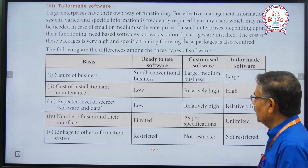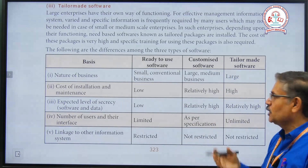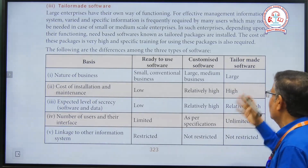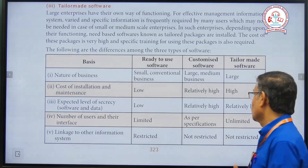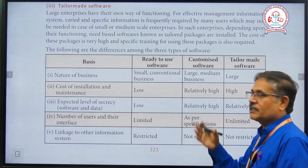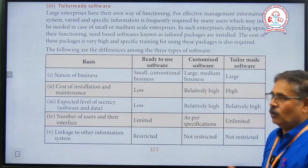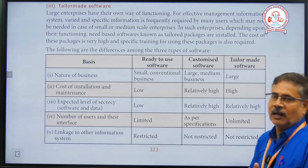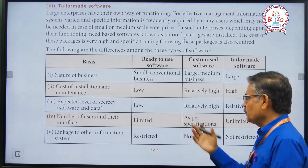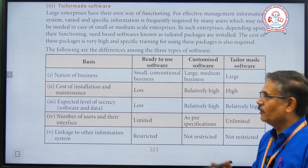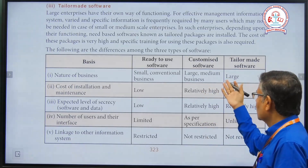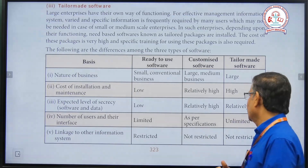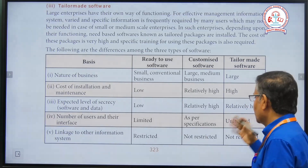Comparing the three types: for the nature of business, readymade software suits small and convenient businesses, customized suits medium businesses, and tailor-made suits large businesses. For cost of installation, readymade is low, customized is relatively high, and tailor-made is very high. For the expected level of secrecy, readymade is low, customized is relatively high, and tailor-made is also relatively high.